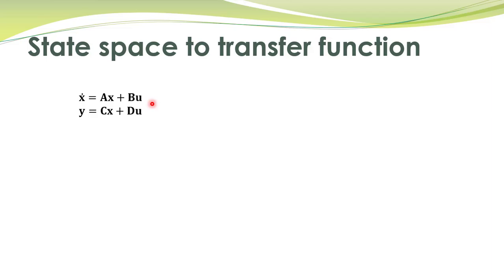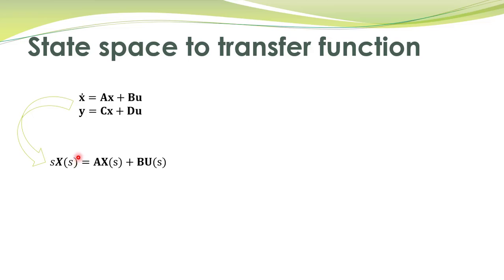This is a state-space representation for linear systems, and we want to obtain its transfer function. The approach is simple. We take the Laplace transform of the first equation. You remember that when we were talking about transfer functions, we were always taking initial conditions to be equal to zero. So this equation's Laplace transform is given with all initial conditions equal to zero. If initial conditions are not equal to zero, then there is an additional term, but for obtaining the transfer function, we take initial conditions equal to zero.